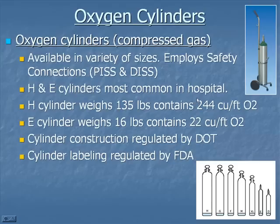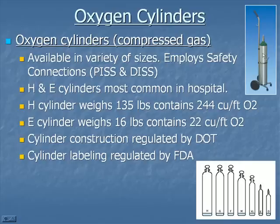The liquid is vaporized to a gas, reduced to a pressure of around 50 psi, and fed into the hospital piping systems. Oxygen cylinders are compressed gas available in a variety of sizes. They typically employ safety connections — PISS and DISS.